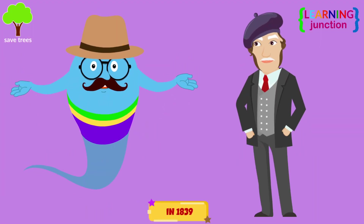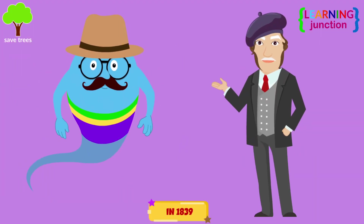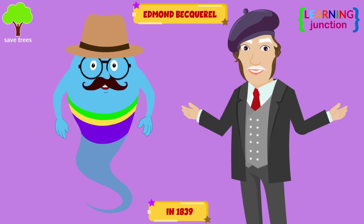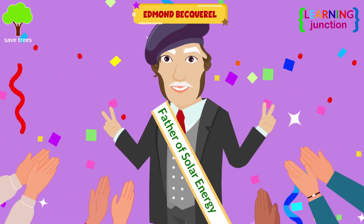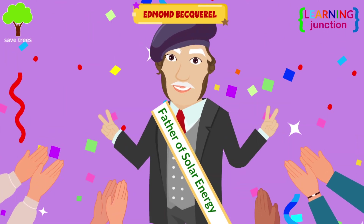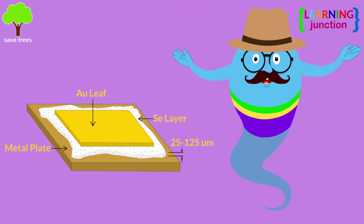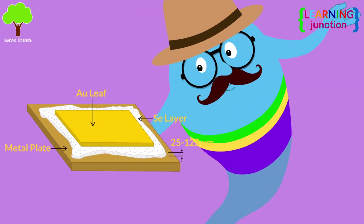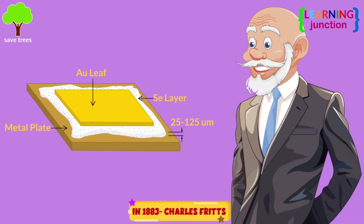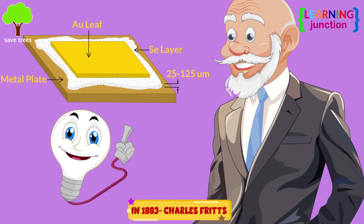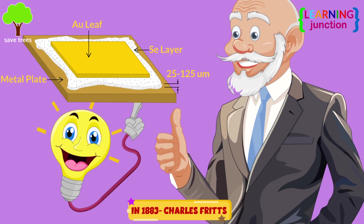In 1839, solar hit its first milestone when Edmund Becquerel discovered the photovoltaic effect, becoming the father of solar energy at only 19 years old. The first solar cells, made from selenium wafers, were produced by Charles Fritz in 1883. These panels directly converted light into energy.